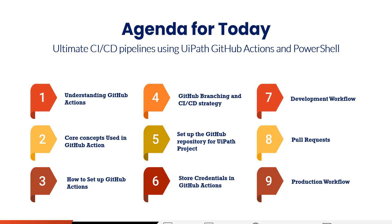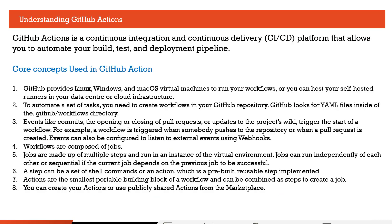GitHub Actions is a continuous integration and continuous delivery platform that allows you to automate your build, test, and deployment pipeline. It is very similar to what we have in Microsoft Azure. It provides Linux, Windows, and macOS virtual machines to run your workflow. You can also host self-hosted runners in your data center or cloud infrastructure. In this example, we are going to use the runner provisioned by GitHub, so we are not going to create any runner.